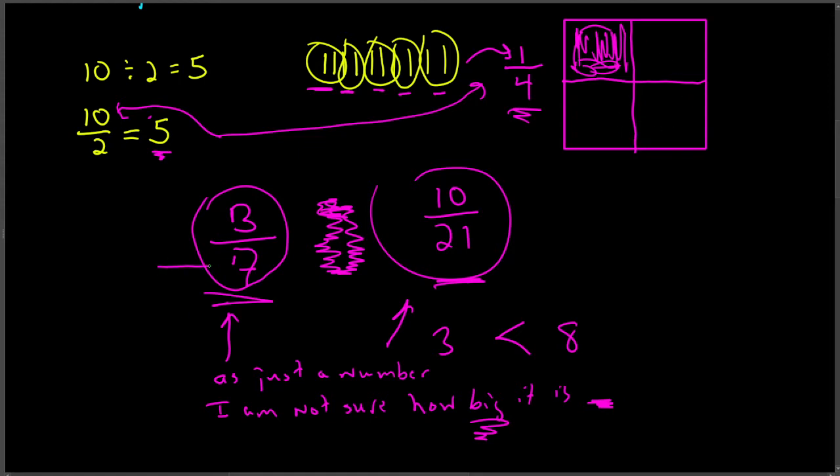A good rule of thumb is the bigger the bottom number is, the denominator, the smaller the piece. If I were to cut this into 21 pieces, they'd be very small pieces compared to these four.